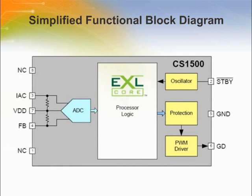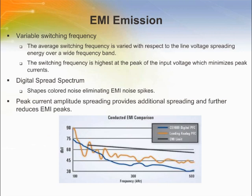The digital signal is then processed in the control algorithm, which determines the behavior of the CS1500/CS1600 during startup, normal operation, and under fault conditions such as brownouts, over voltage, over current, over power, and over temperature conditions. The CS1500/CS1600 uses a proprietary digital control algorithm to shape conducted EMI emissions, resulting in significantly reduced EMI filter requirements.